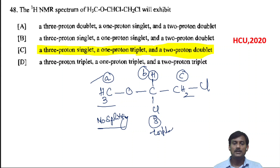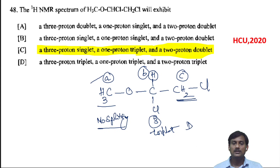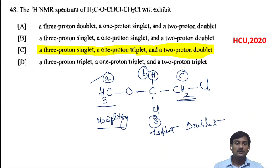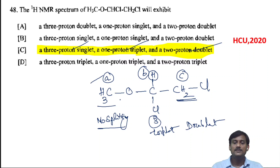For type C (the two CH2 protons), their signal is split by the one adjacent proton (type B), giving N+1 = 2, so you observe a doublet — actually a triplet by N+1 rule with one neighboring proton giving a doublet. In summary, you observe a three-proton singlet, a one-proton triplet, and a two-proton doublet in this molecule.